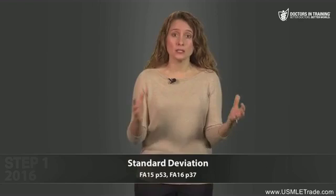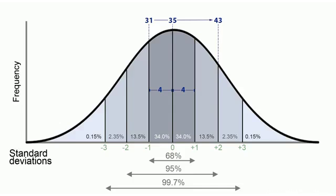A normal distribution or Gaussian distribution looks like a perfect bell curve. With this distribution, one standard deviation on each side of the mean contains 68% of the population. Two standard deviations on either side of the mean contain 95% of the population. And three standard deviations on either side of the mean contain 99.7% of the population, which is nearly 100%. So remember: 68, 95, and 99%.